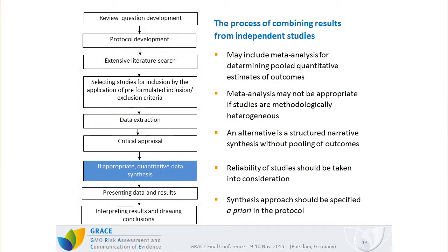The next step is the process of combining single-study results from independent studies, which may include a quantitative data synthesis by meta-analysis. Meta-analysis may not be appropriate if studies are methodologically too heterogeneous — this has always to be kept in mind. An alternative approach is always a structured narrative synthesis without pooling the outcomes. The reliability of study results from the critical appraisal step should also be considered in this synthesis step. As with other steps, the synthesis approach should be made explicit a priori in the review protocol.